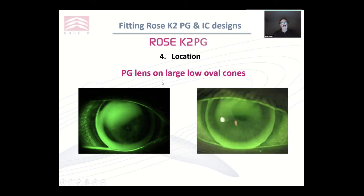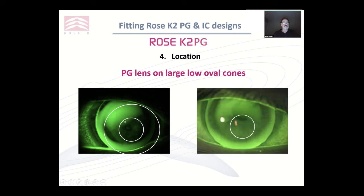I mentioned that the post-graft lens is quite ideal in some cases of large decentred oval cones. Here we have two cases with large decentred oval cones. If I tried to fit a smaller diameter keratoconic lens, the lens would decentre down and it would be very difficult to get it to sit up under the lid over the pupil, causing discomfort and poorer vision. By going to a larger lens with a larger back optic zone, we can make sure the highest point in the cornea is still within the optic area without the lens having to decentre. So larger diameters like PG are quite ideal for very decentred cones.